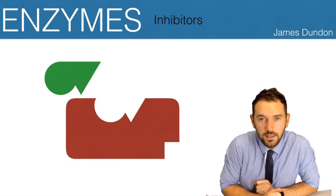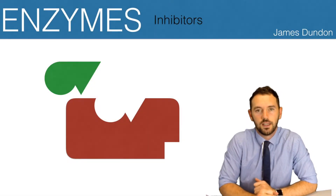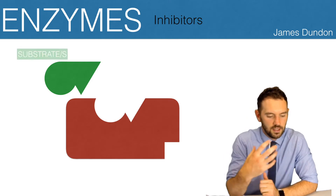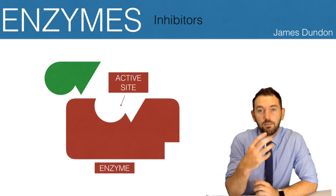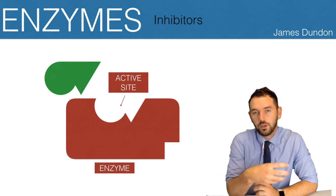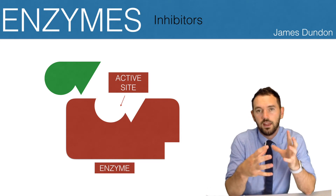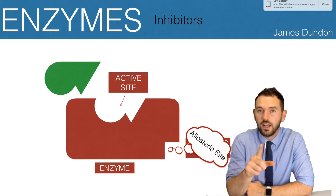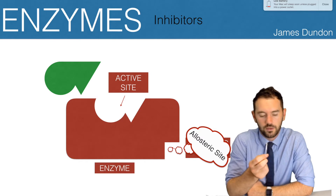Welcome back. In the previous video we looked at enzymes and we noticed that we had a substrate, we have an enzyme, we have a particular place on the enzyme which we call the active site, and that's where the substrate and the enzyme bind together and undergo the reaction. We also introduced the allosteric site — a place outside of the active site which is also a binding location.